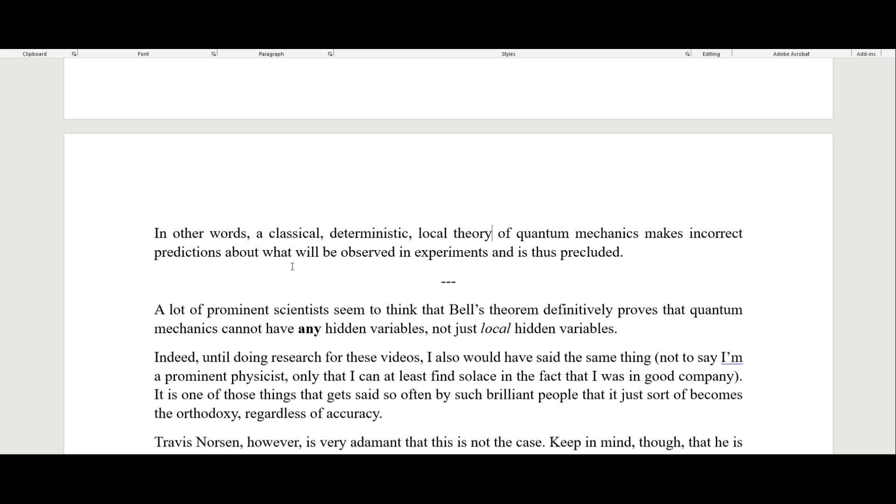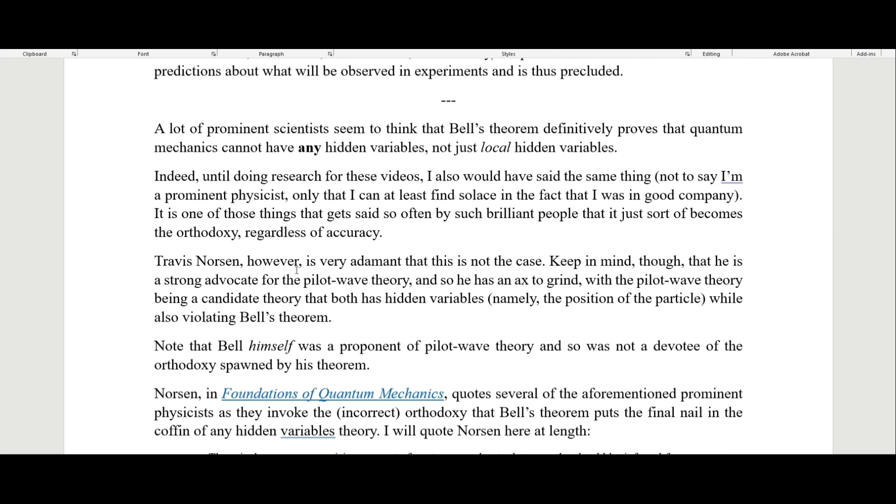Travis Norsen talks about how a lot of scientists seem to think that Bell's theorem and the experiments that show violations of Bell's theorem demonstrate that quantum mechanics can't be a hidden variables theory. Many prominent scientists seem to think that Bell's theorem definitively proves that quantum mechanics cannot have any hidden variables, not just local hidden variables. Until doing research for these videos, I also would have said the same thing. It's one of those things that gets said so often by such brilliant people that it just becomes the orthodoxy, regardless of accuracy.